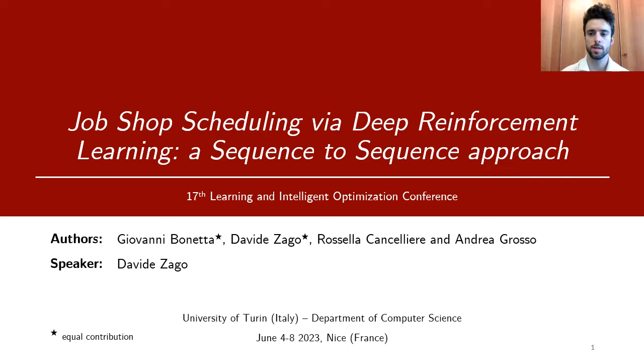Hi, I'm Davide Zago, a junior researcher from the University of Turin. Today I'm presenting the joint work I did with PhD Giovanni Bonetta and professors Rossella Cancelliera and Andrea Grosso. Our work proposes a new sequence-to-sequence approach that uses deep reinforcement learning for job-shop scheduling.